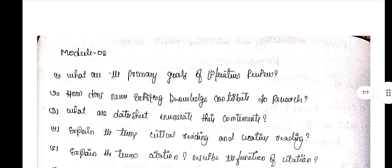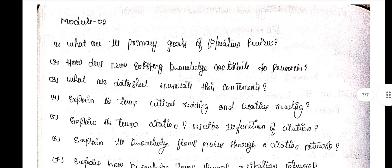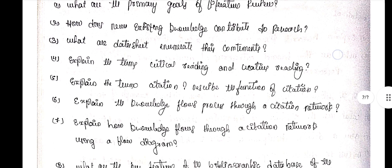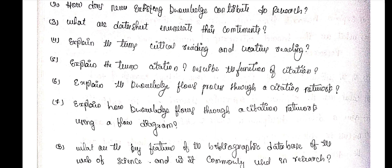Moving to second module. Question 1 — what are the primary goals of a literature review? Question 2 — how does new existing knowledge contribute to research? Question 3 — what are data sheets and enumerate their contents? Question 4 — explain the terms critical reading and creative reading. Question 5 — explain the term citations and describe the functions of citations. Question 6 — explain the knowledge flows process through a citations network.